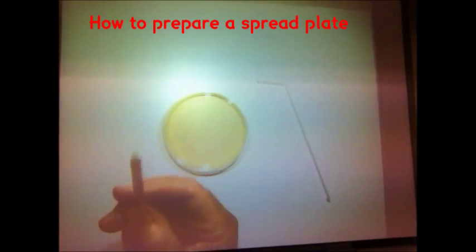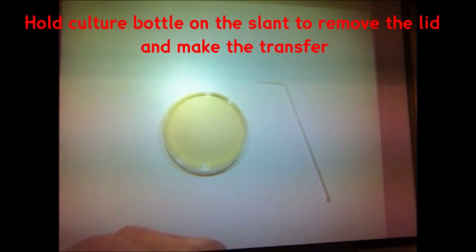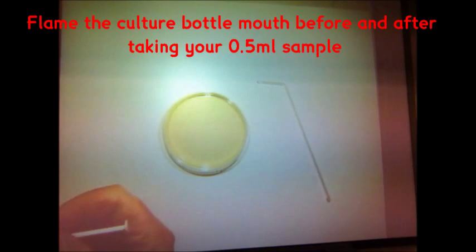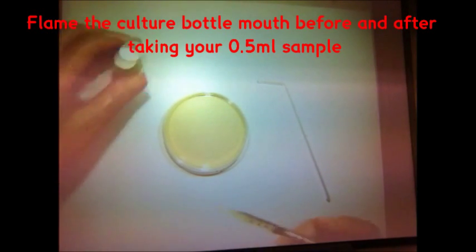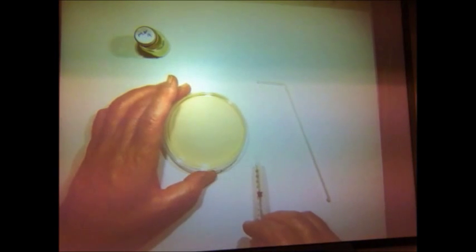Grasp the lid of the container with your little finger, rotate the bottle, flame the mouth of the bottle, reach in with your syringe and draw up, in this case 0.5 ml. Flame the mouth of the bottle again and seal the bottle up.